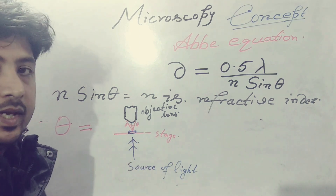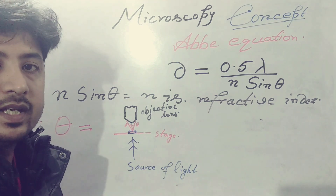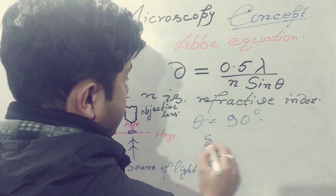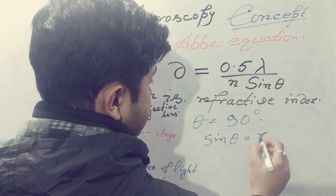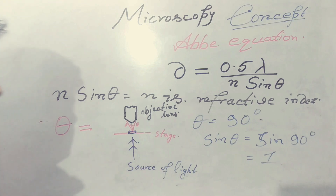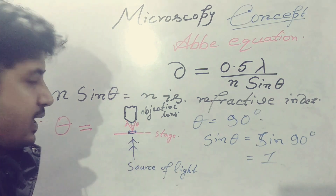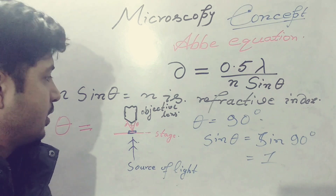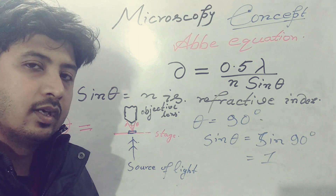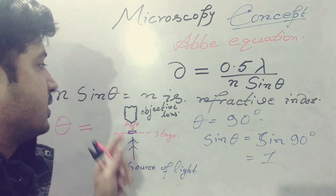When passing through air, the angle theta can be 90 degrees, so sine theta equals sine 90 degrees which equals 1. Here is an important trick: if the angle is narrower — meaning the refracted light passing through the specimen is much more narrow — then the two points are not well separated, so the resolution will be lower if only narrow light reaches the objective lens.